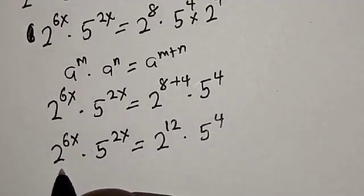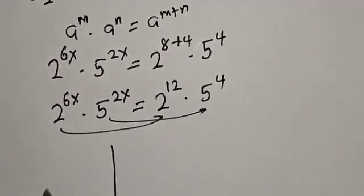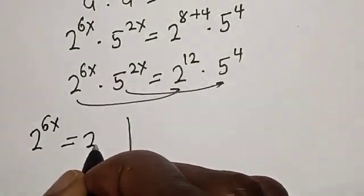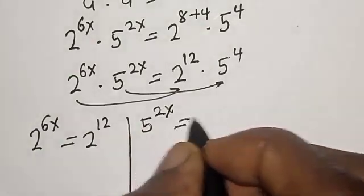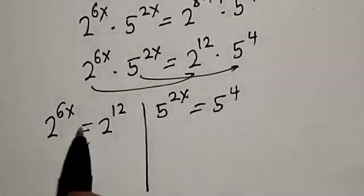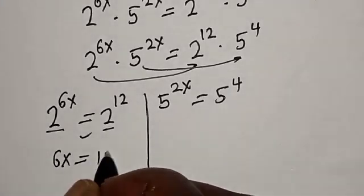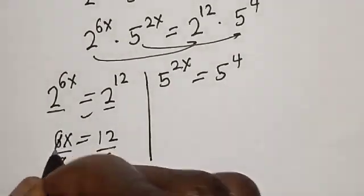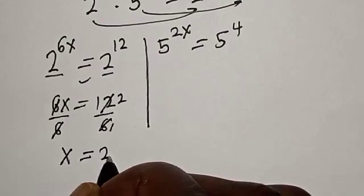By comparing, this goes to this and this goes to this. We have 2 cases here. Case 1: 2 raised to power 6s is equal to 2 raised to power 12. Since they have the same base, 6s is equal to 12. Dividing both sides by 6, s1 is equal to 2.